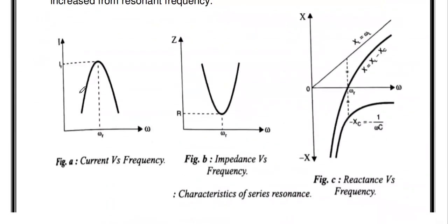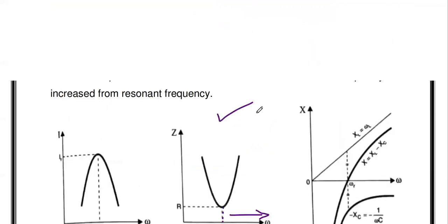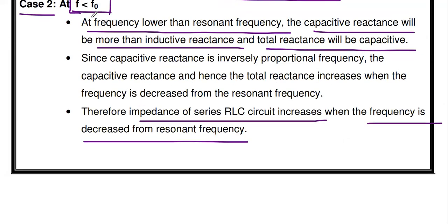Looking at the impedance versus frequency graph: when omega equals omega_R, the impedance reaches its minimum value R. Below the resonant frequency, the impedance decreases from a maximum value down to this minimum R. Case 3: above the resonant frequency, the impedance increases. So whenever the frequency is decreased from resonance, impedance increases; and looking at the graph, impedance decreases toward R as frequency approaches resonance from below.